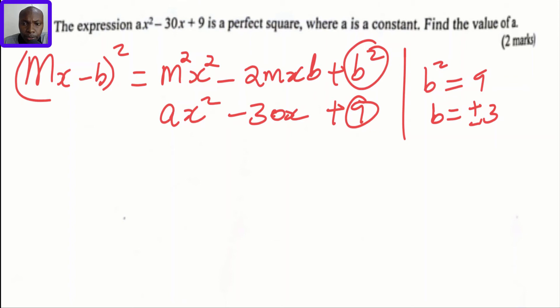This will help me when I compare the middle term. We have -2mxb = -30x. I'm going to pick the coefficients of x. Since both of them are negative, I'm going to compare the coefficients of x: 2mb = 30.